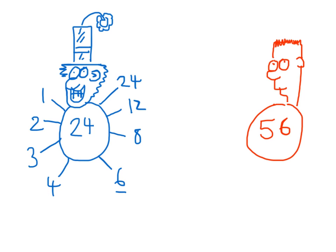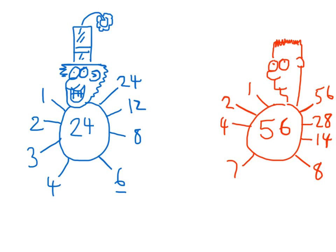So let's look at 56. Well, 1 goes into 56, 56 times. 2 goes into 56, 28 times. 3 doesn't go into 56. 4 goes 14 times. 5 doesn't go, 6 doesn't go, 7 does and that goes 8 times — 7 times 8 is 56. When we reach 8, we've already got 8 on the list, so we won't go any further. So now we've got all our factors of 56 as well.